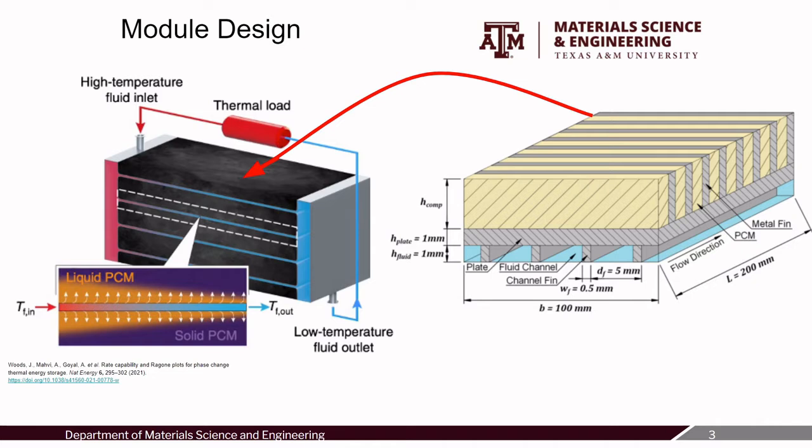For designing such a module, there are many factors that affect the power. There are the intrinsic material properties of the composite — i.e., thermal conductivity, latent heat, specific heat capacity, as well as the density of the material. There are the geometric considerations: the length, width, and thickness of the module, as well as the overall shape and metal distribution. Lastly, there are the environmental conditions, such as the inlet flow velocity and fluid temperatures.